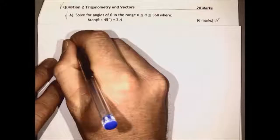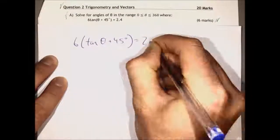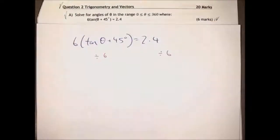The first step here is to get rid of that 6 from both sides of the equation by dividing both sides by 6.